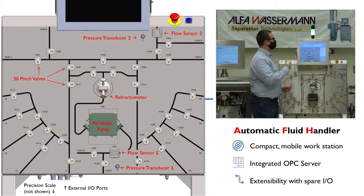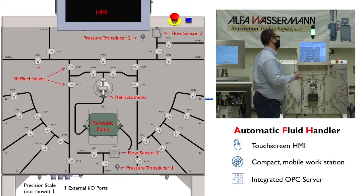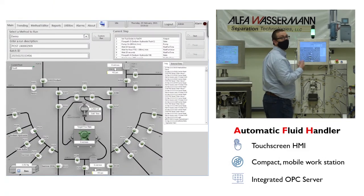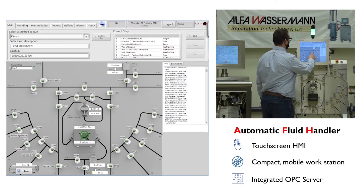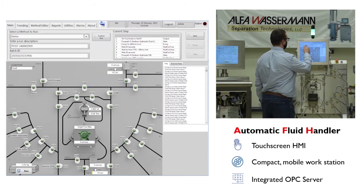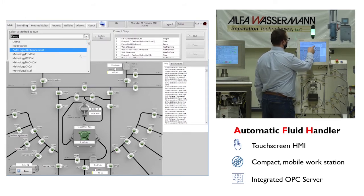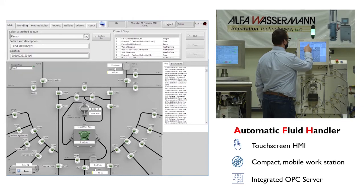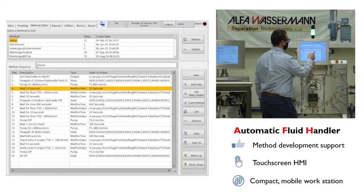All this instrumentation is displayed and controlled with a touchscreen HMI computer where an operator can see real-time values from all the sensors and instrumentation that I just mentioned. In addition, this is where an operator can manually control pinch valves and flow rates. But really, this system is designed to operate automatically based on a method, which is usually written by a supervisor or an engineer. This is done over here on the method editor tab.